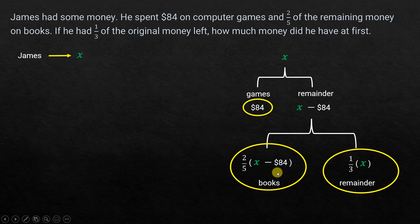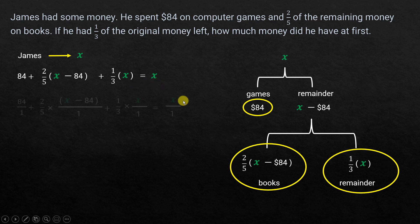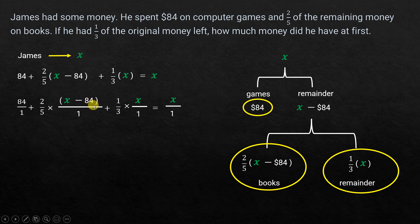So the equation is: 84 + (2/5)(X − 84) + (1/3)X = X. Rewriting so it's easy for those new to algebra: 84 over 1, plus 2 over 5 times (X − 84) over 1, plus 1 over 3 times X over 1, equals X over 1.